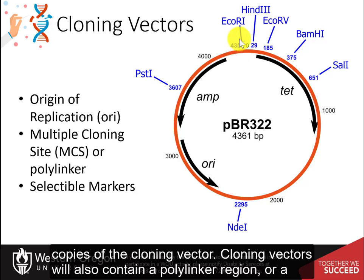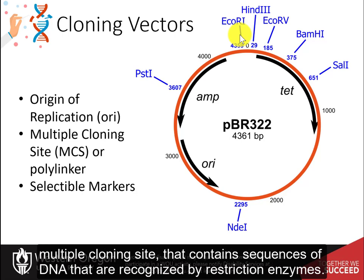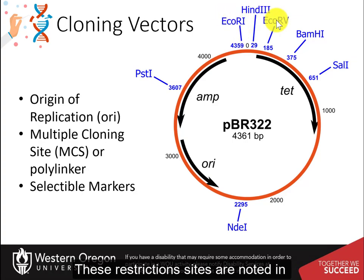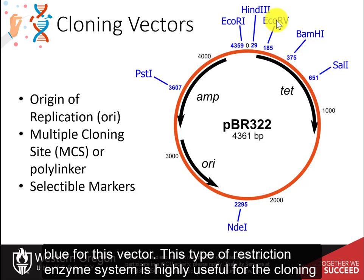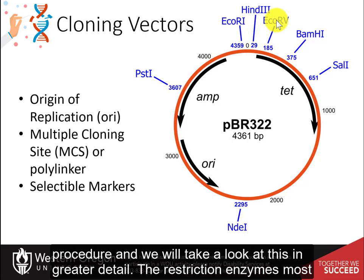Cloning vectors will also contain a polylinker region, or a multiple cloning site, that contains sequences of DNA recognized by restriction enzymes. These restriction sites are noted in blue for this vector. This type of restriction enzyme system is highly useful for the cloning procedure, and we will take a look at this in greater detail.